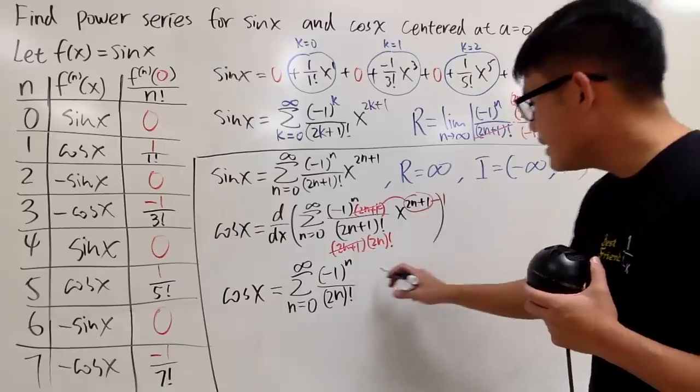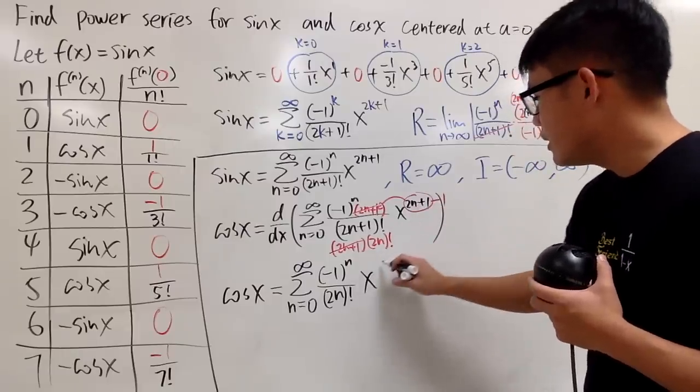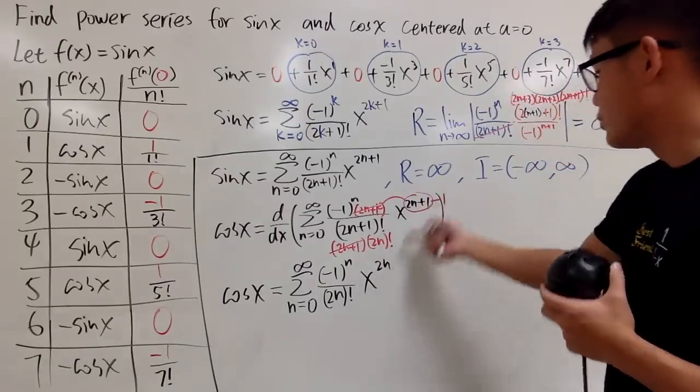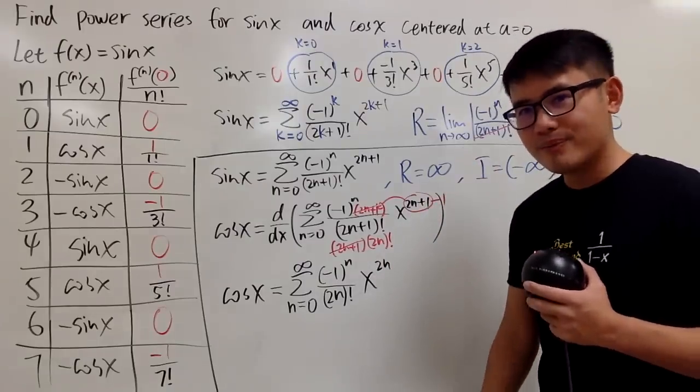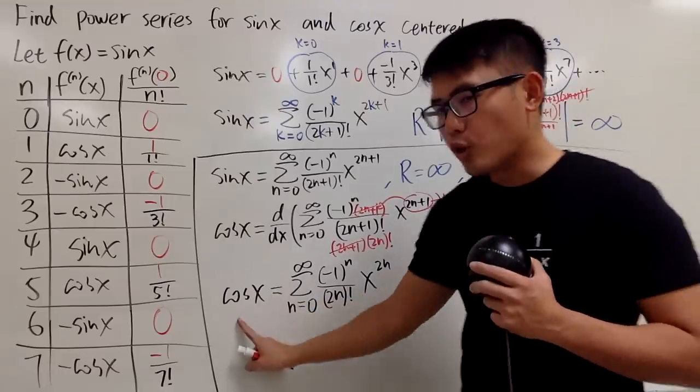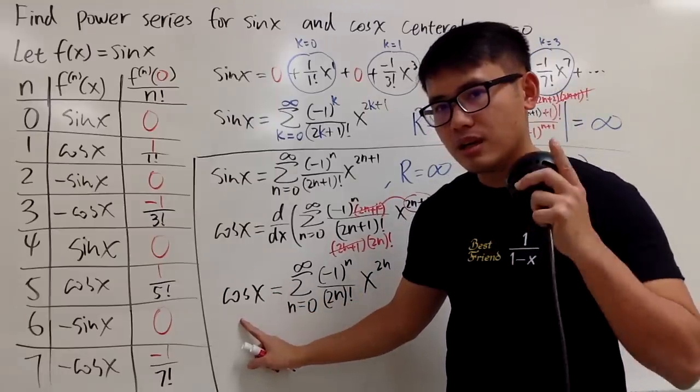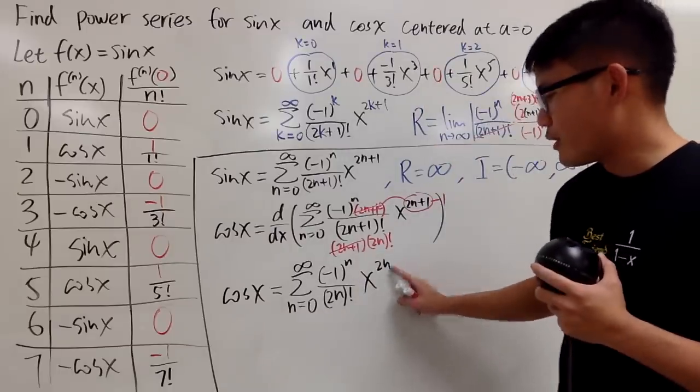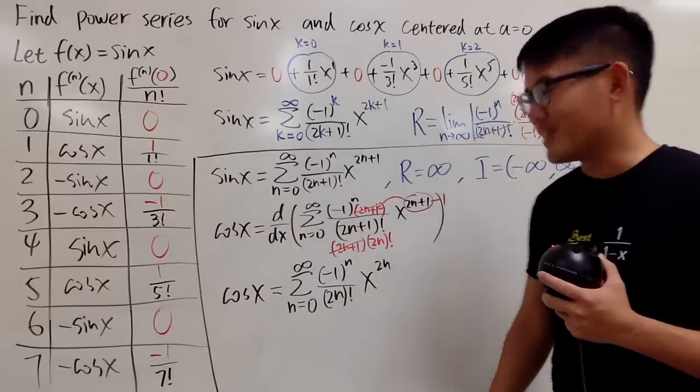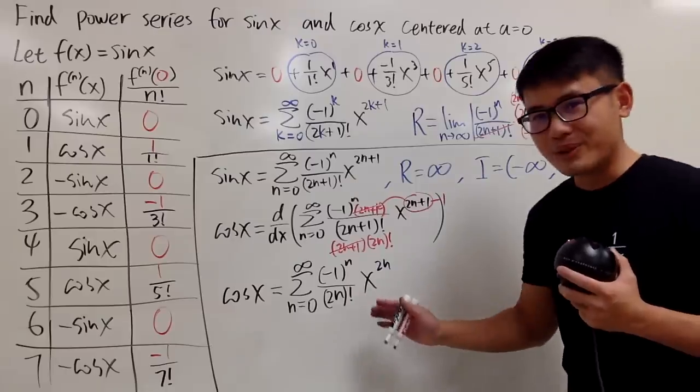In parentheses, you do the factorial. And then on the side, you multiply by x to the 2n plus 1 minus 1, which is, of course, just 2n power. Yes, cos x is an even function, even power, and then you divide by the even factorial, and it's alternating. It's really cool.